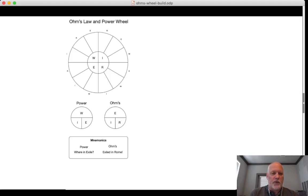If I was looking for I in the power equation, I would see that W is on top of the horizontal bar, so it's a fraction. So I is equal to W over E. And E is equal to W over I. And the W is always on top.